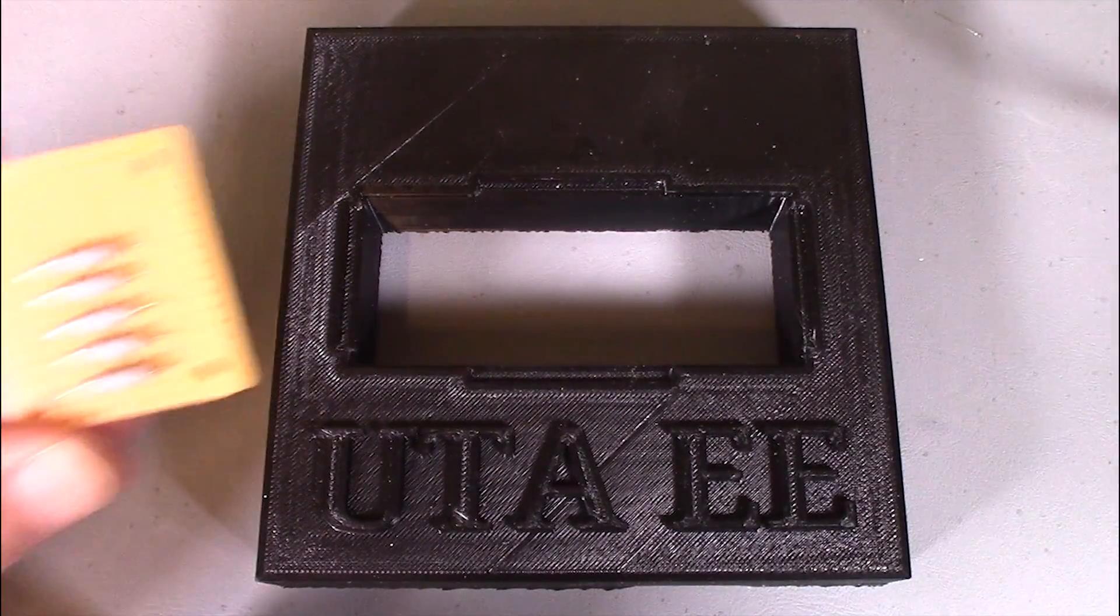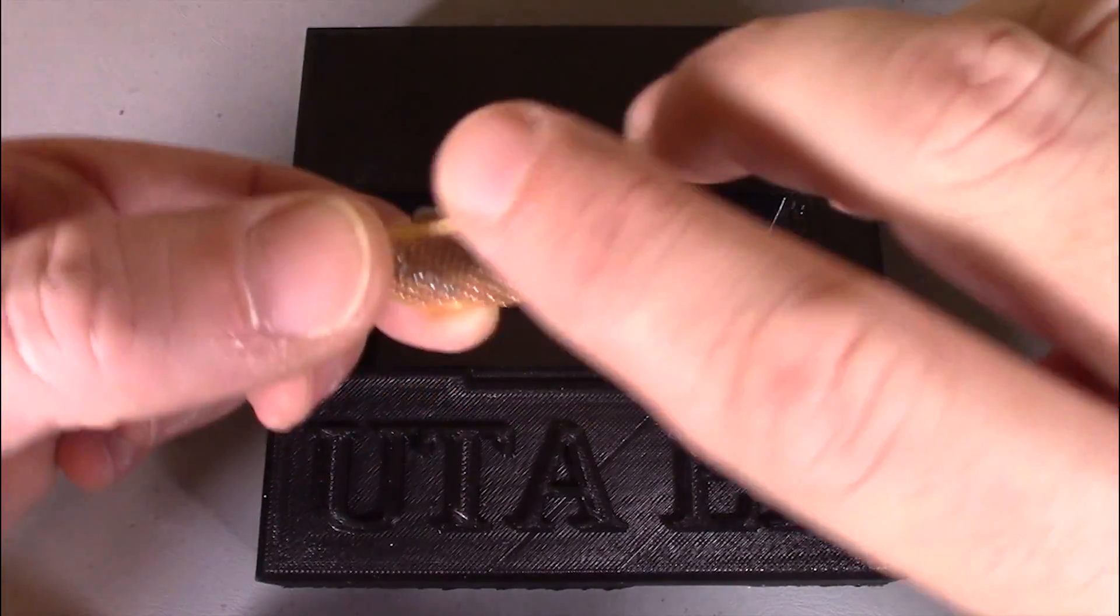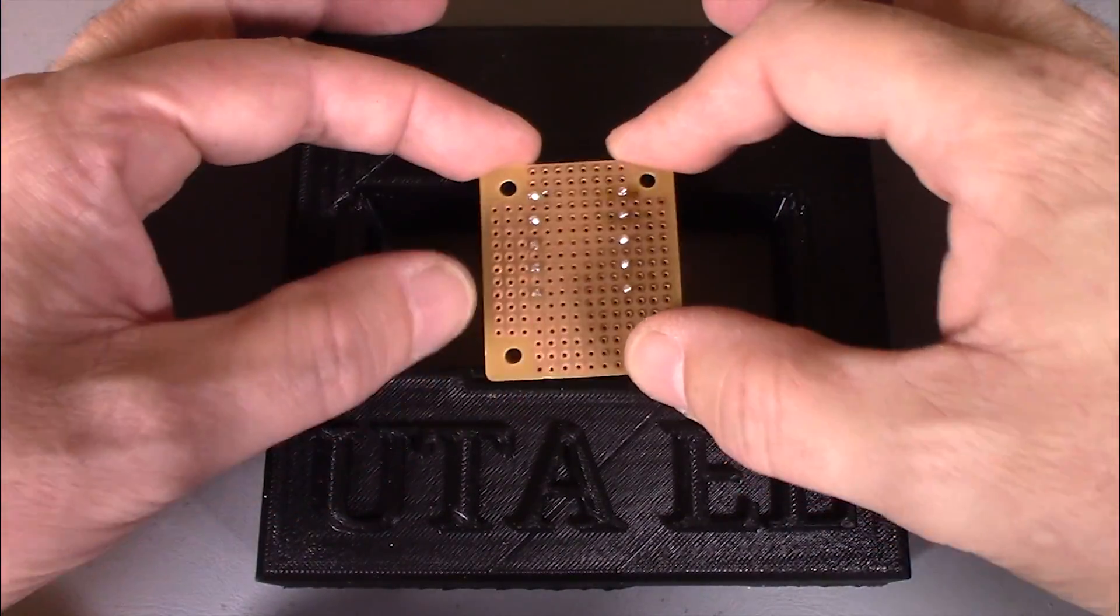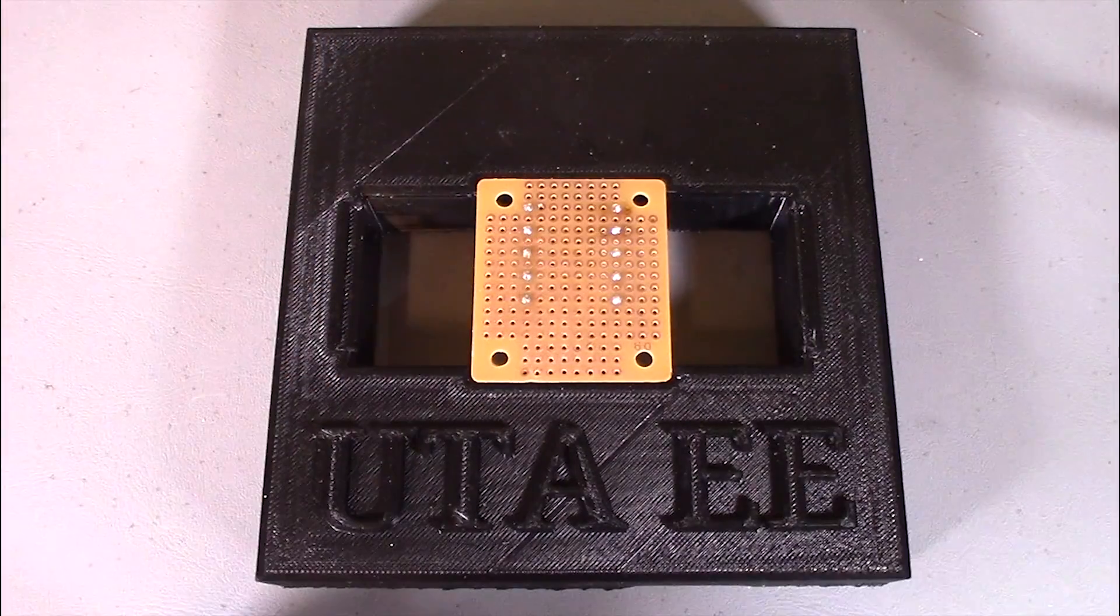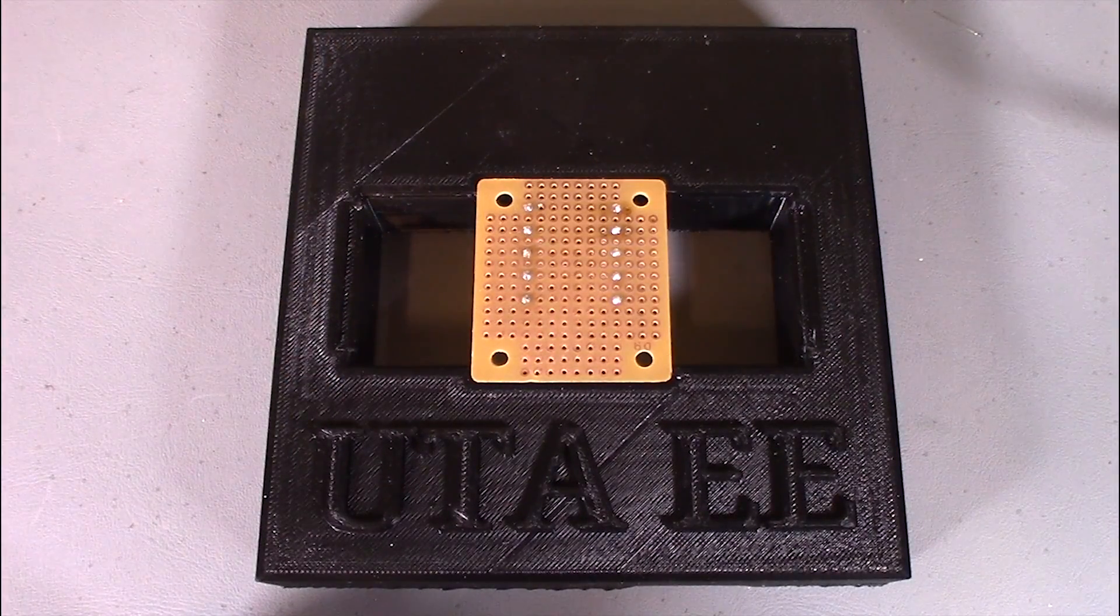If you're following along with our video series, secure the PCB with a vise or tape the edges to your work surface. UTA electrical engineering students can secure the PCB in the UTA custom fixture.